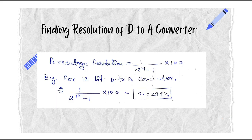One question that arises is how to find the resolution of a D to A converter. The formula uses n to denote the number of bits. For example, for a 12-bit D to A converter, we can see in the picture that the result would be approximately 0.244 percent.